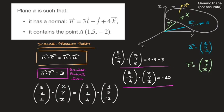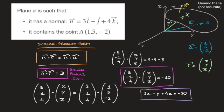One of the great things about the scalar product form is how easy it now is to get the Cartesian equation. All we do is calculate the scalar product on the left-hand side: 3 times x is 3x, plus negative 1 times y is minus y, plus 4 times z is plus 4z, all equal to negative 10. So the Cartesian equation of this plane is 3x - y + 4z = -10. We now know how to write a plane's equation in scalar product form and find its Cartesian equation using a normal to the plane and the coordinates of a point on it.